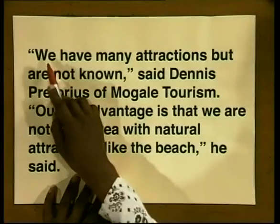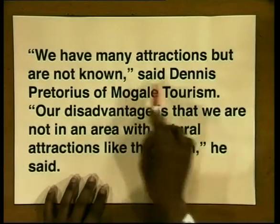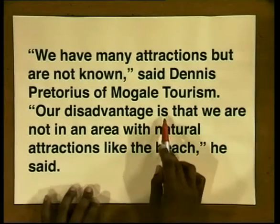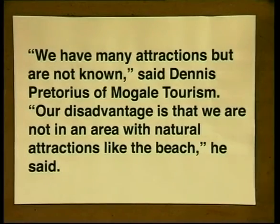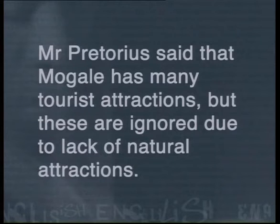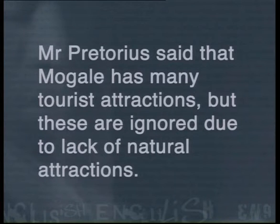The article continues with a quotation. 'We have many attractions but are not known,' said Dennis Pretorius of Mokhalee Tourism. 'Our disadvantage is that we are not in an area with natural attractions like the beach,' he said. When someone has been quoted in an article, it's not necessary to reproduce their exact words. Instead, you can write it down in indirect speech like this: Mr. Pretorius said that Mokhalee has many tourist attractions but these are ignored due to the lack of natural attractions. Note that I have not given the example of the beach as a natural attraction — it's not necessary to include examples in summaries.